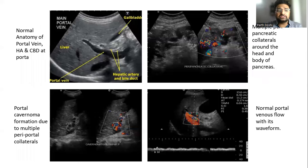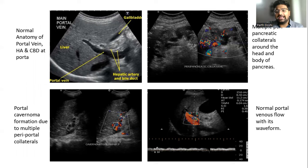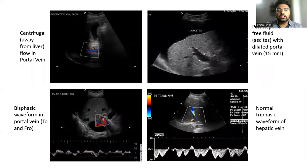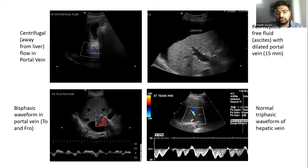These ultrasound images show the normal anatomy at the porta, certain peripancreatic collaterals, cavernomatous transformation of the portal vein due to multiple collaterals, and a normal portal venous flow with its waveform. Additional images show the centrifugal flow pattern in the portal vein along with ascites and a dilated portal vein, a biphasic waveform in the portal vein which is the to-and-fro flow pattern, and the normal triphasic waveform of the hepatic vein.